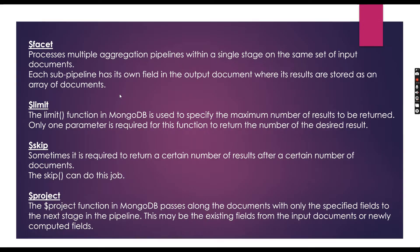Next we are going to use the limit operator. The limit function in MongoDB is used to specify the maximum number of results to be returned. For example, if we specify 10 to the limit function, it only returns 10 documents.